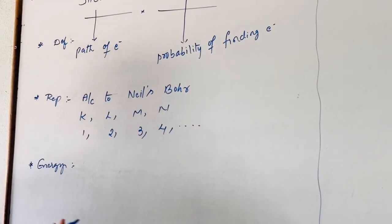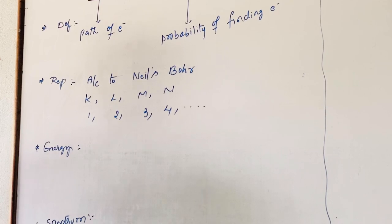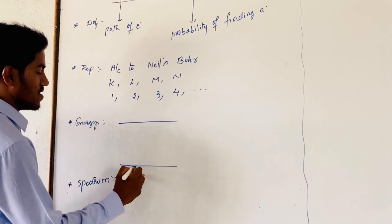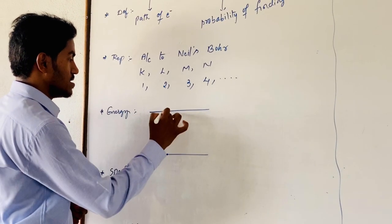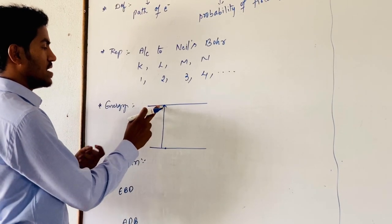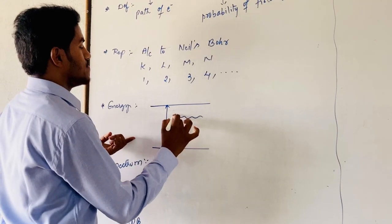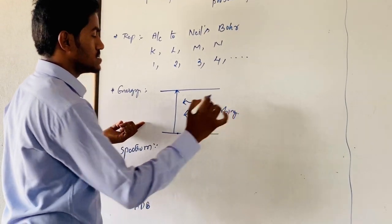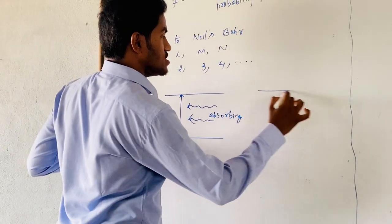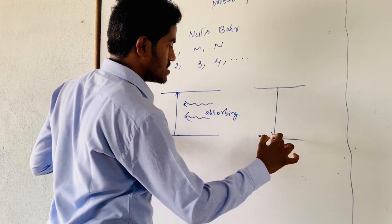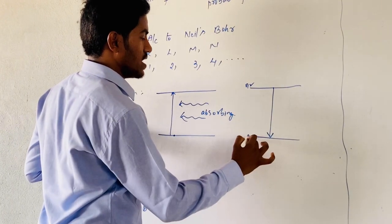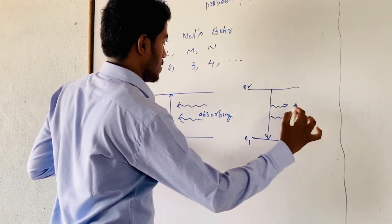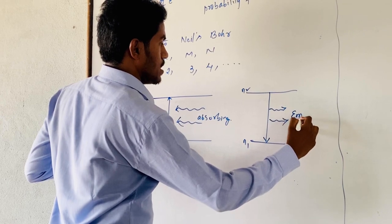Now, how is the energy change observed during the transition of an electron? The electron may be excited from a lower energy level to a higher energy level — at that time, the amount of energy is absorbed. When the electron jumps from a higher energy level to a lower energy level, that is from N2 to N1, the amount of energy is released or emitted.